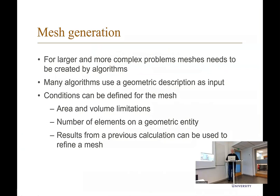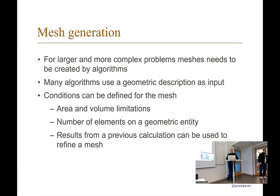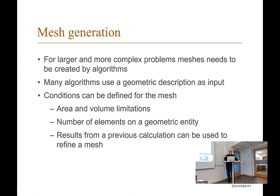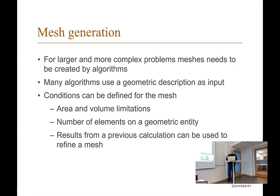For a lot more complex problems, meshes need to be created by algorithms, and there are many algorithms available for generating meshes. Many of these have a geometric description as a base from which they generate elements. You can also set constraints on the meshes—for example, guaranteeing that all elements generated are less than a certain area or volume. You can set how many elements you want on a certain geometric line, and it's also possible to refine the mesh from previously generated results, such as refining where you have high gradients in your model.